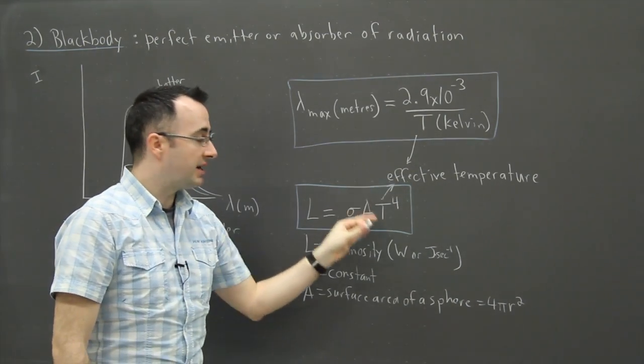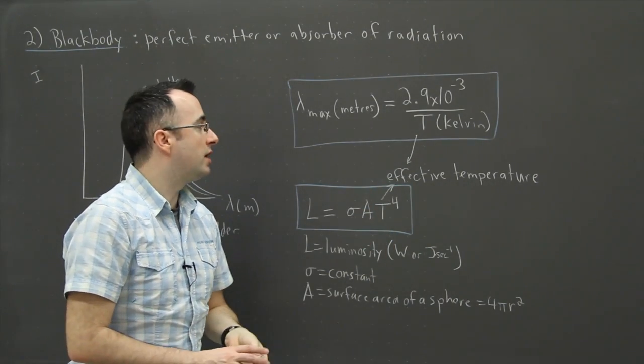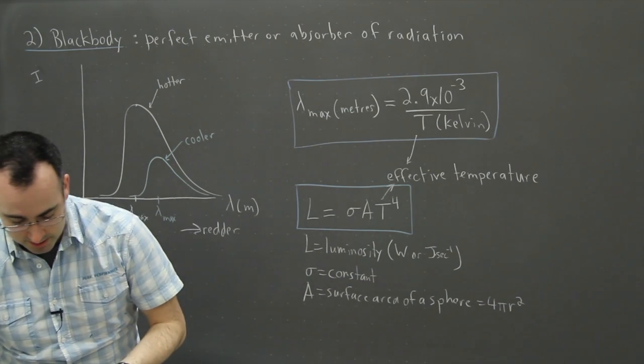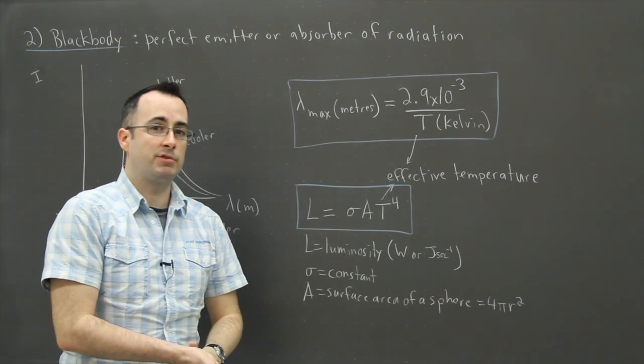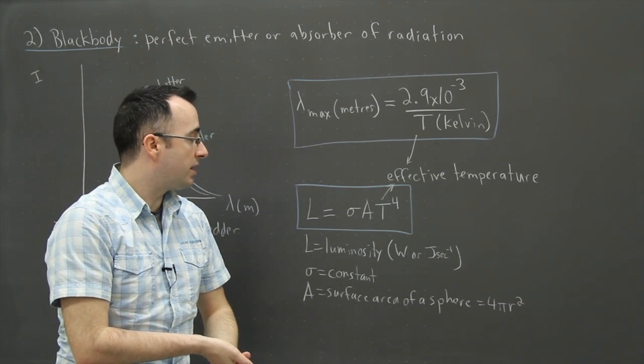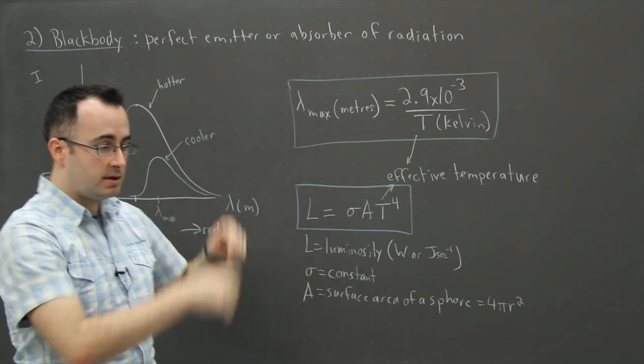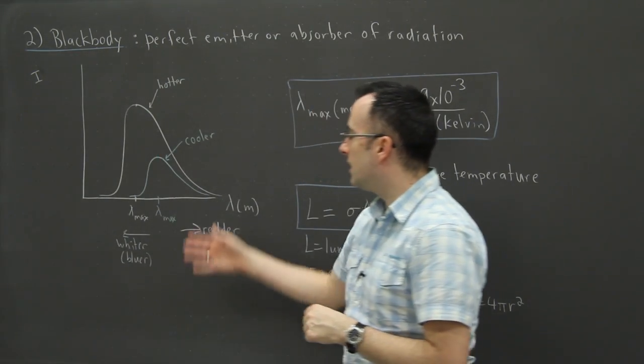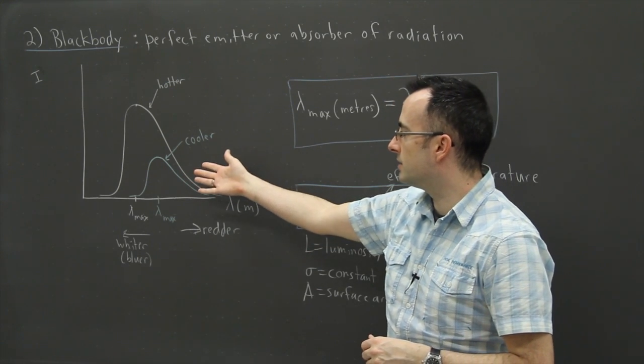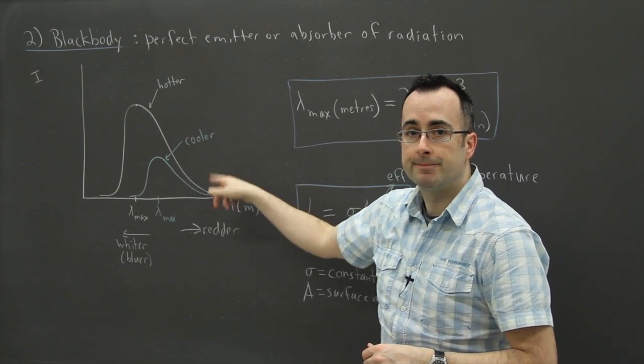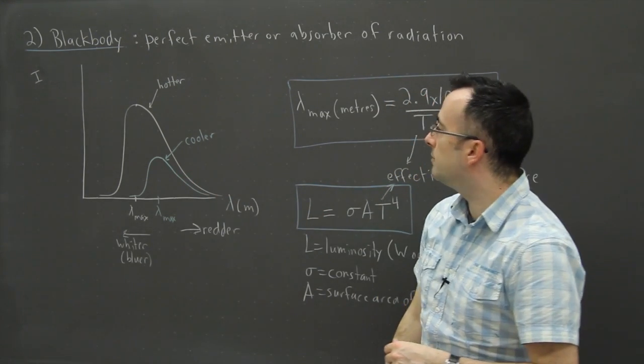So both of these equations right here help us to know something about a black body curve and also relates the effective temperature. Those are actually pretty important and they're not actually that hard to use. You'll be seeing in past exam questions that these are pretty straightforward. It's important just to know what they mean and I think it's really nice to look at how this associates with these curves right here.